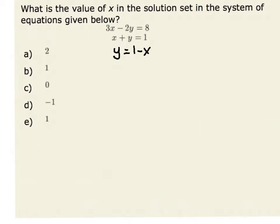I'm now going to substitute this value for y into my first equation. Therefore, I have 3x minus 2 times y, and y can be represented as 1 minus x, and that is equal to 8.